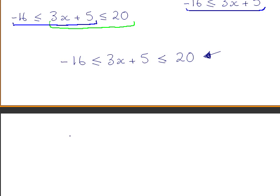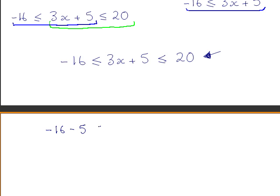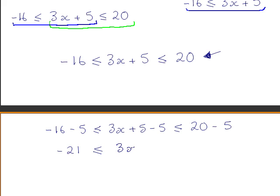To do this, we subtract 5 from each part of the inequality statement — from the left side, the middle part, and the right part. That gives us minus 21 on the left side and 15 on the right. We then divide each part of the inequality by 3. This gives us minus 7 less than or equal to x less than or equal to 5.